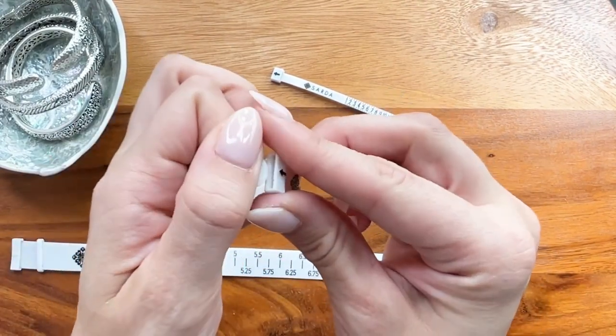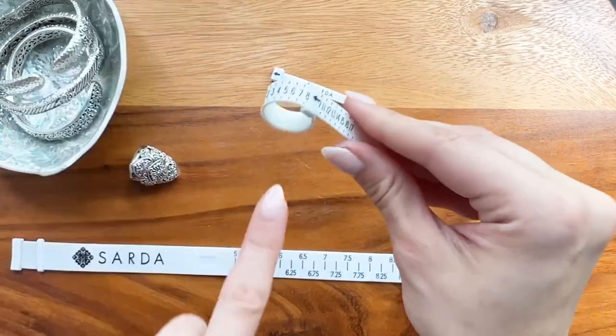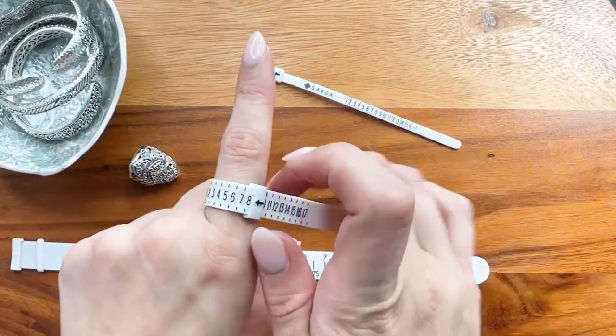Take the ring sizer, insert the tab through the loop and pull. Place on your finger and pull to snug yet comfortable fit.